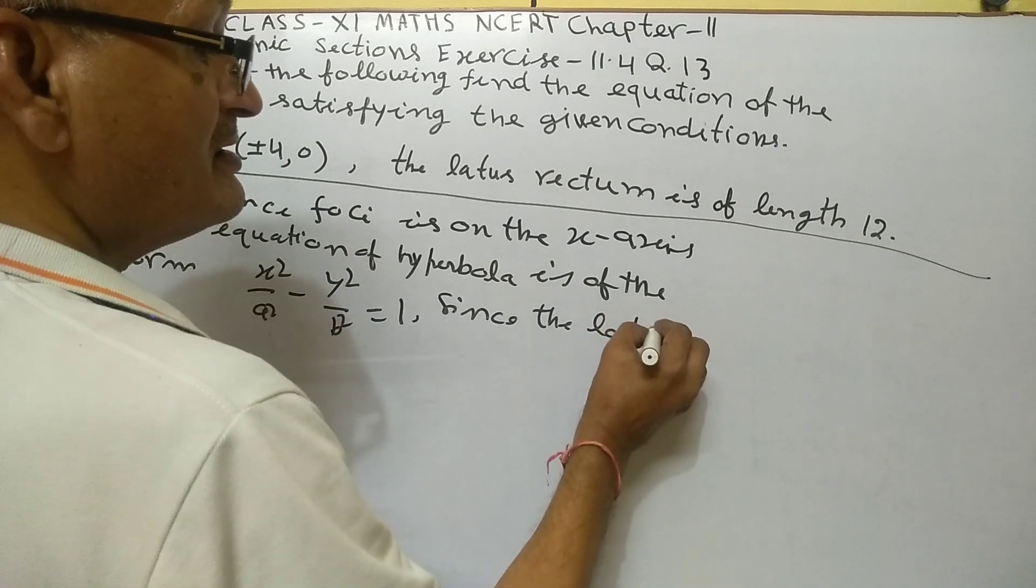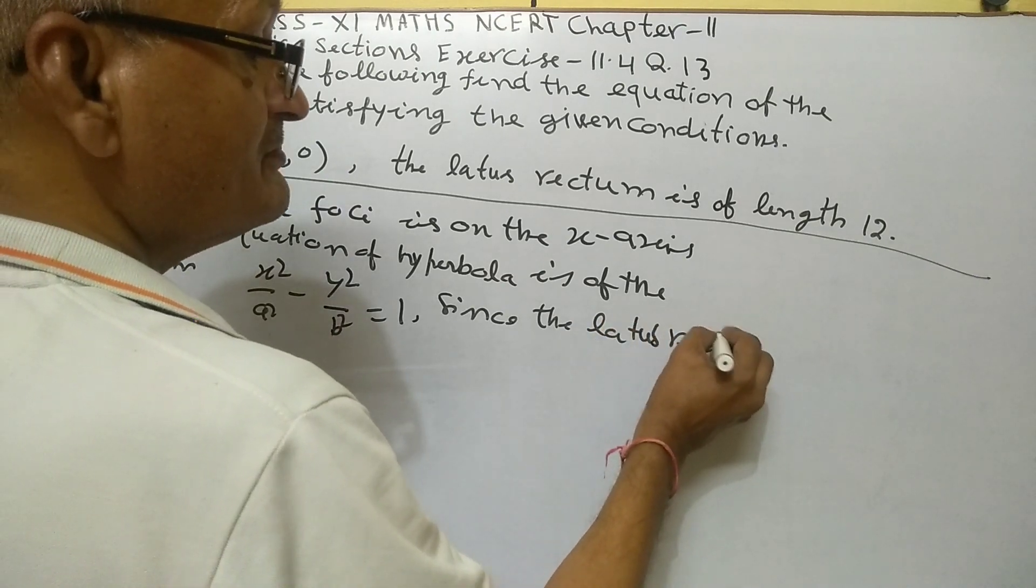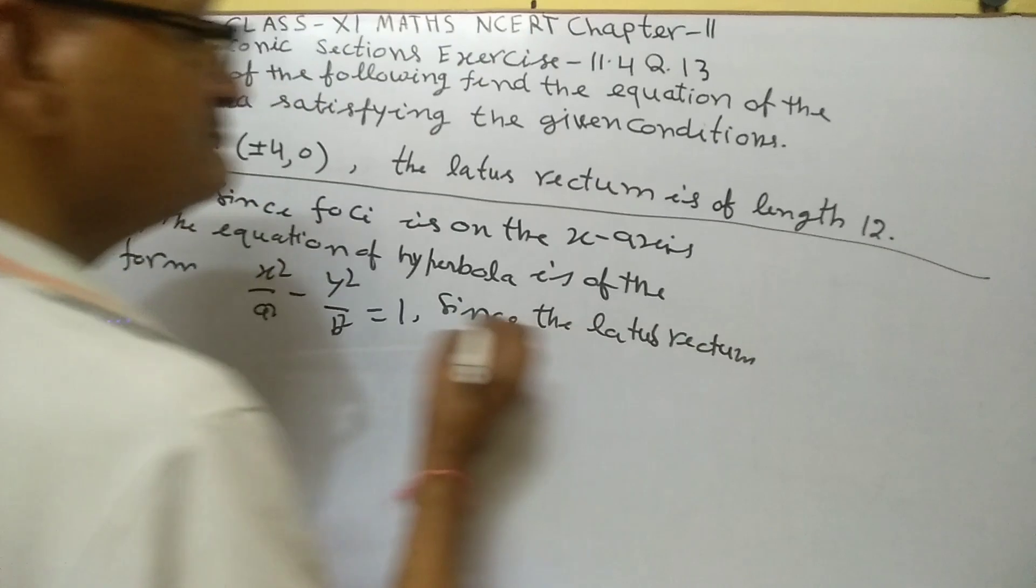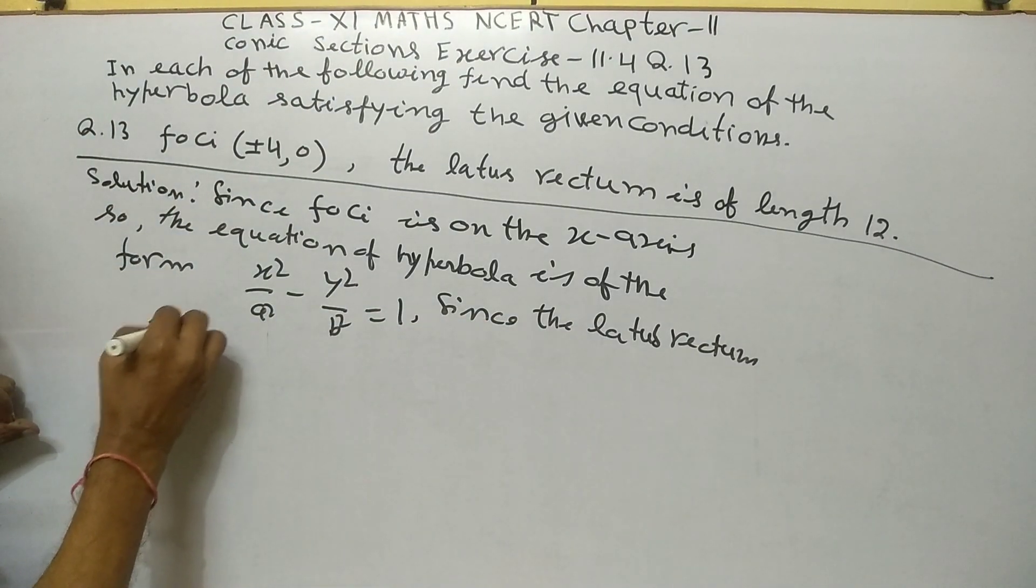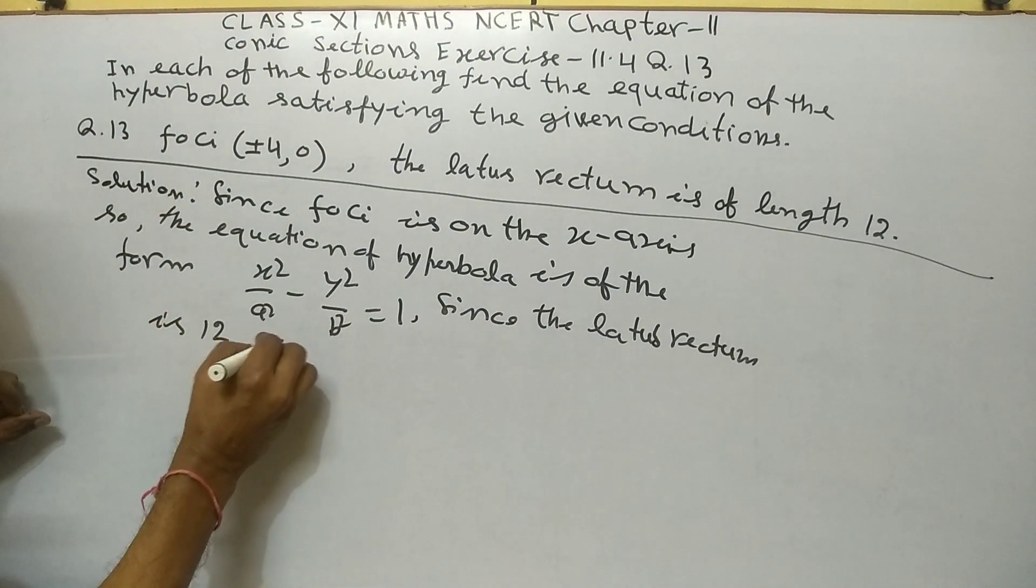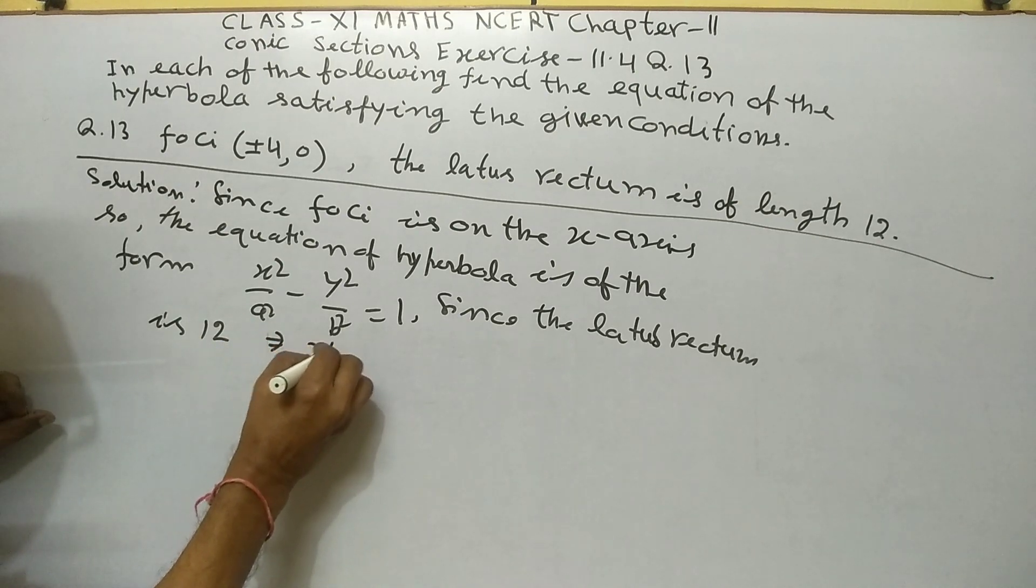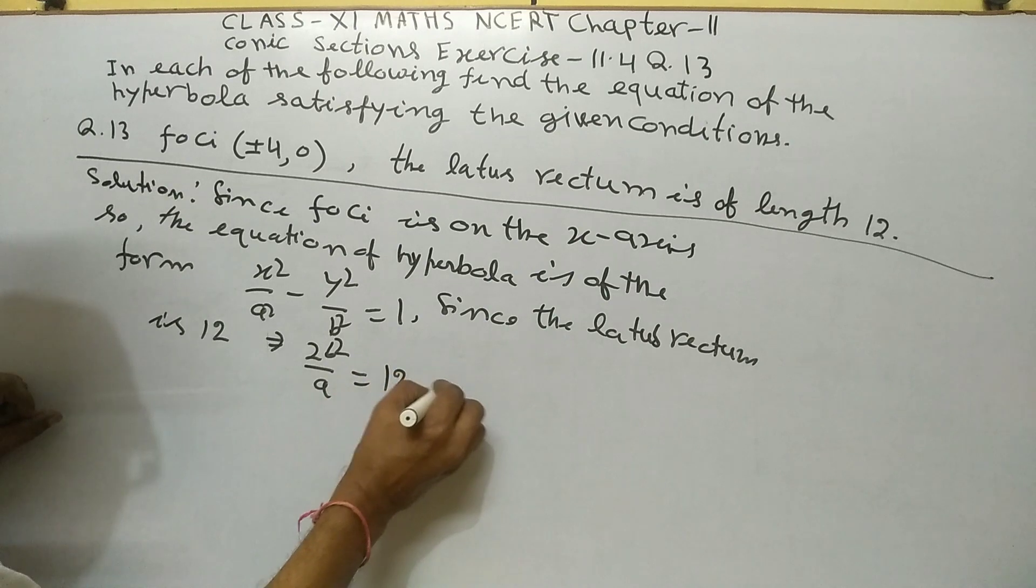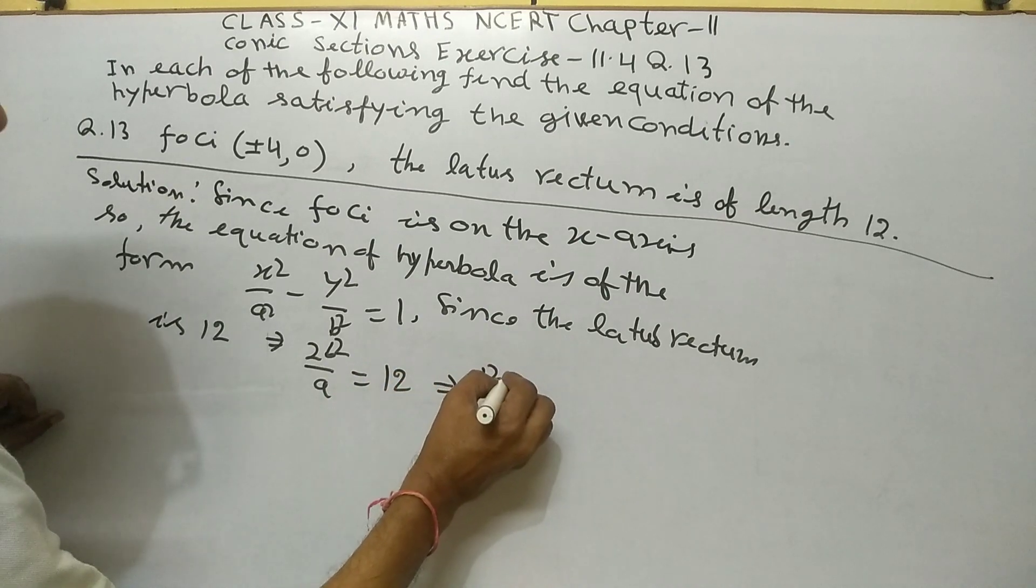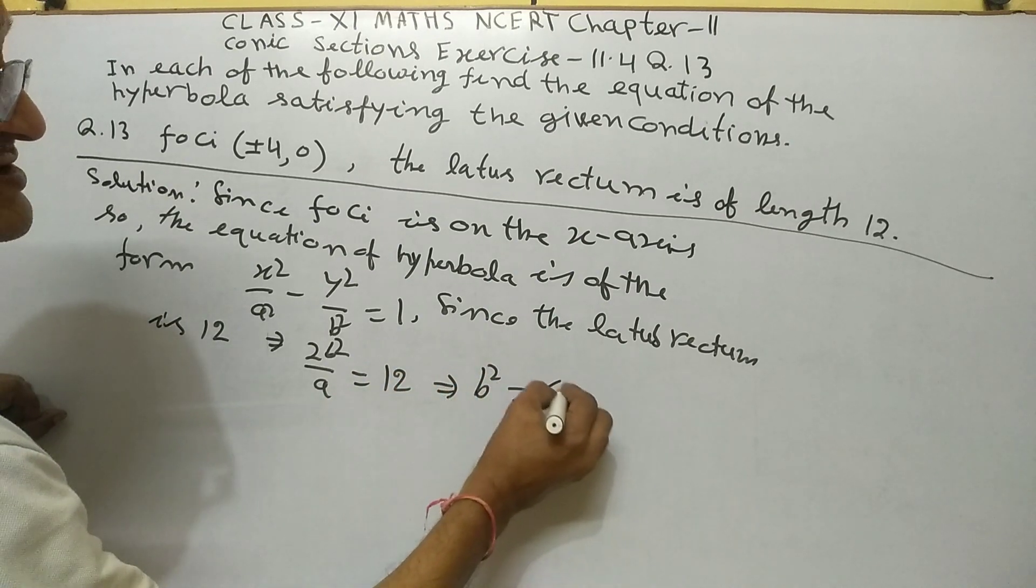Since the latus rectum is 12, implies 2b²/a = 12. Implies b² = 6a.